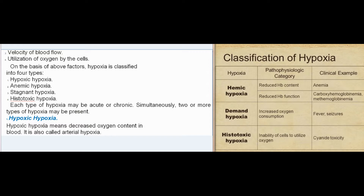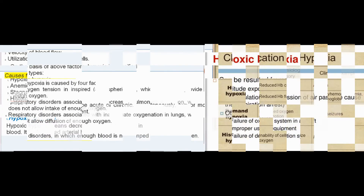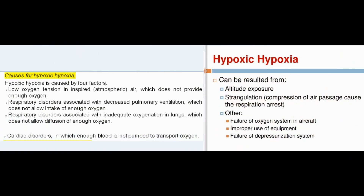Hypoxic hypoxia means decreased oxygen content in blood; it is also called arterial hypoxia. It is caused by four factors: low oxygen tension in inspired (atmospheric) air, which does not provide enough oxygen; respiratory disorders associated with decreased pulmonary ventilation, which do not allow intake of enough oxygen.